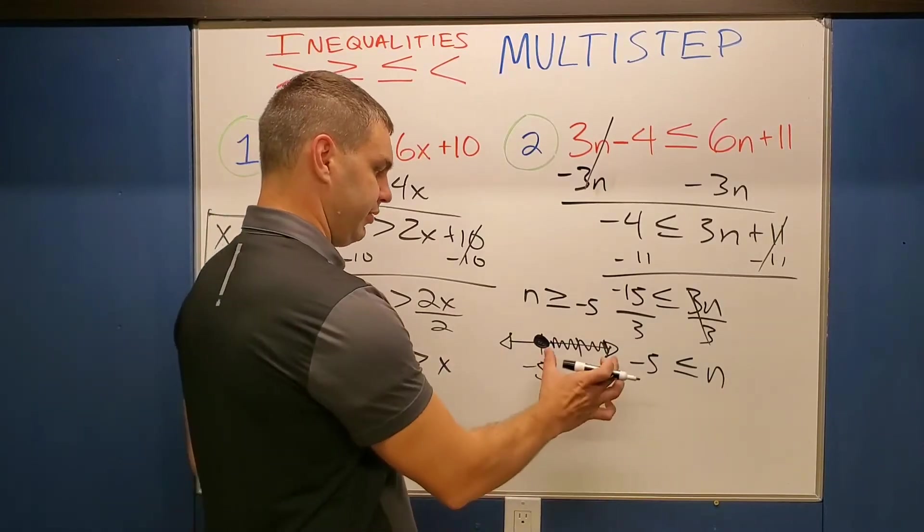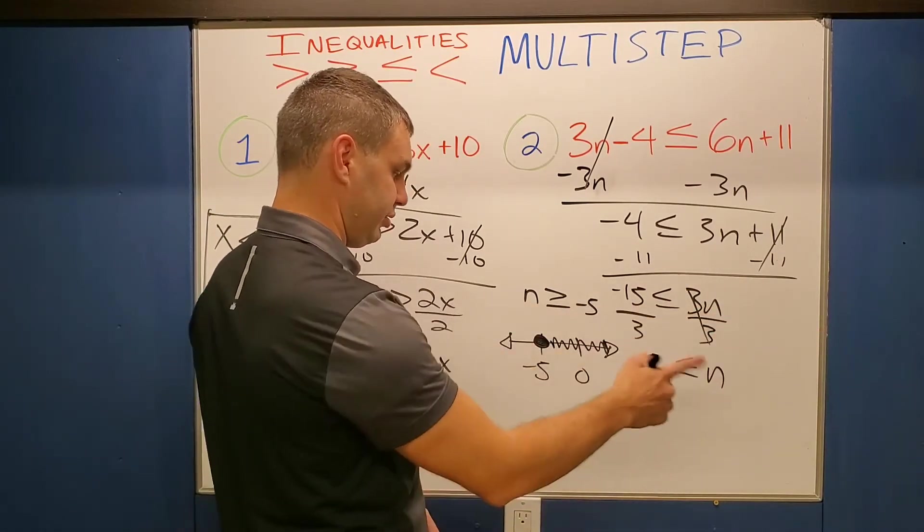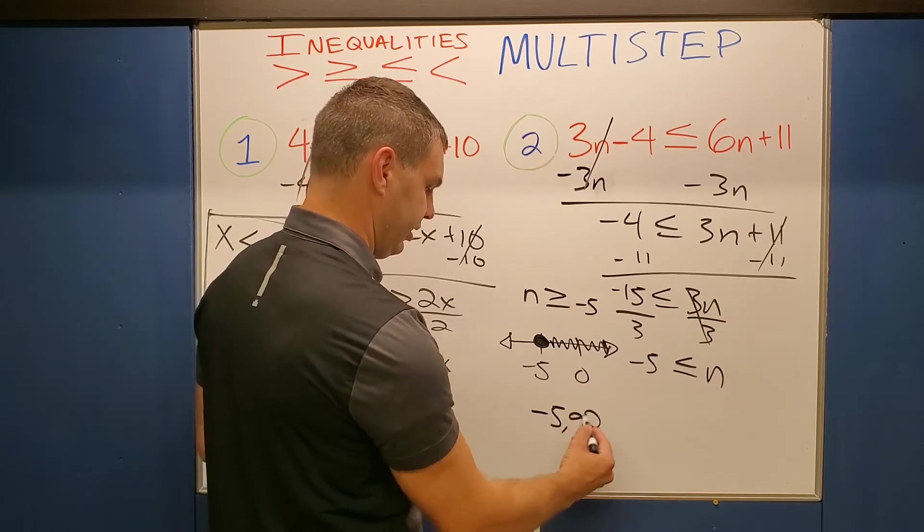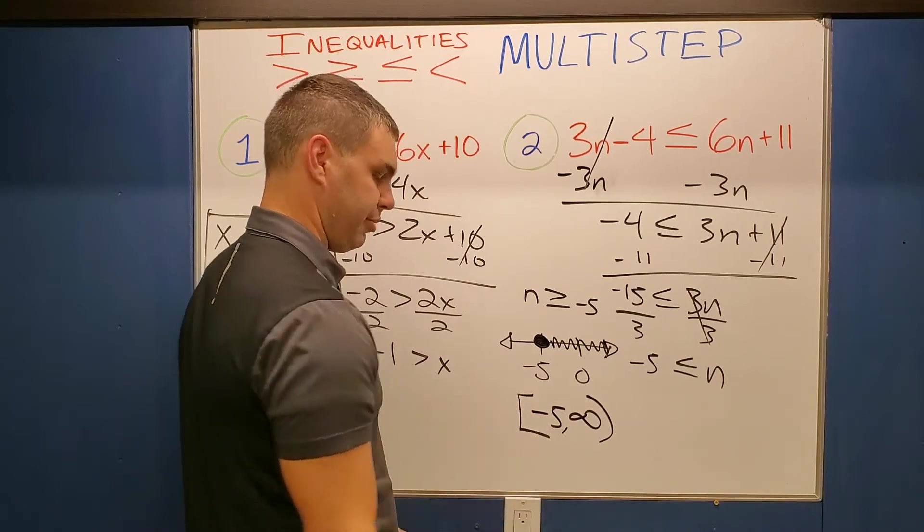Last part of this, the interval notation. Started at negative 5 and the shading ends. It never really ends. It goes to infinity. So we can go from negative 5 to infinity. Infinities get parentheses. Closed dots with the negative 5 get brackets.